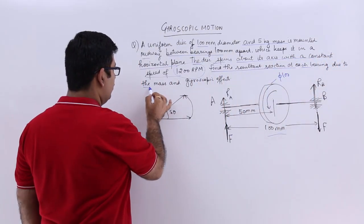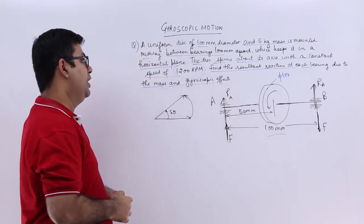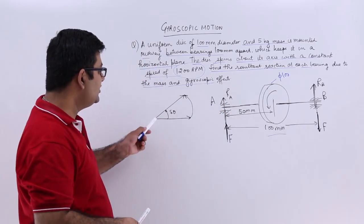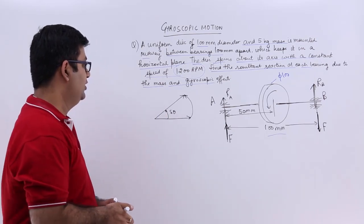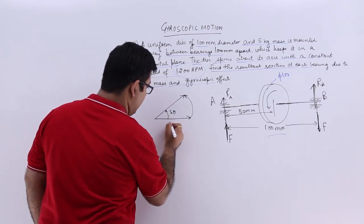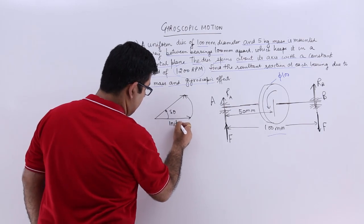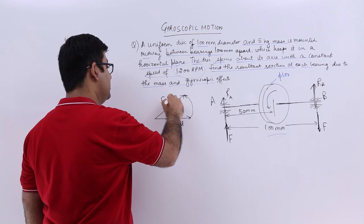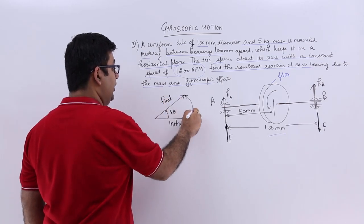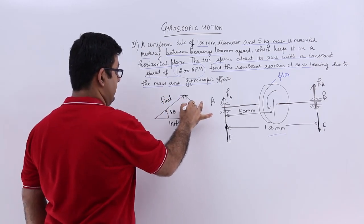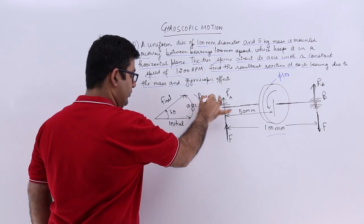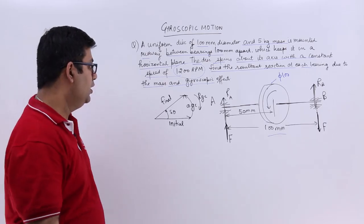Find the resultant reaction at each bearing due to the mass and the gyroscopic effects. So this is how the precessional motion is taking place. This is the initial axis of rotation and this is the final axis of rotation. So this would be the active gyroscopic couple and then you will have a reactive gyroscopic couple.